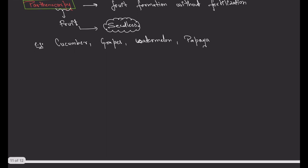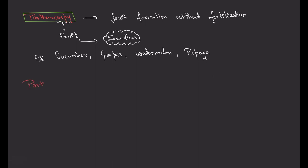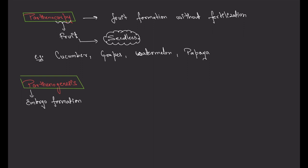One related term is parthenogenesis. Now parthenogenesis is quite similar to parthenocarpy, and this process of parthenogenesis is also quite similar to a process in plants called apomixis.